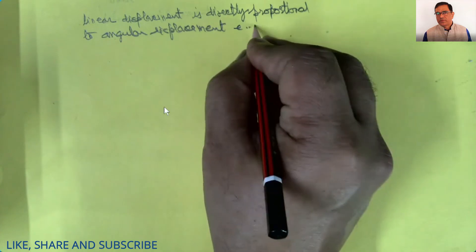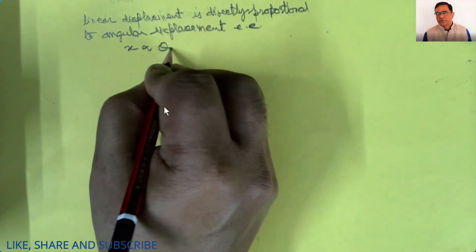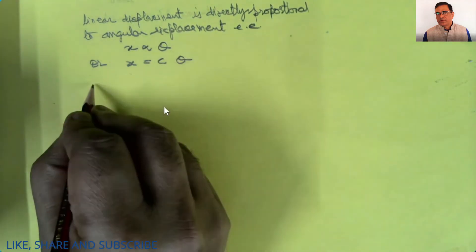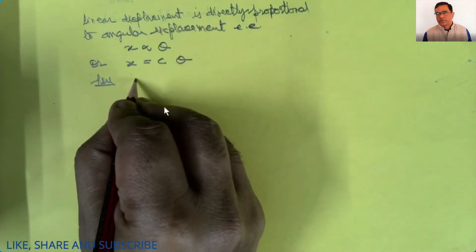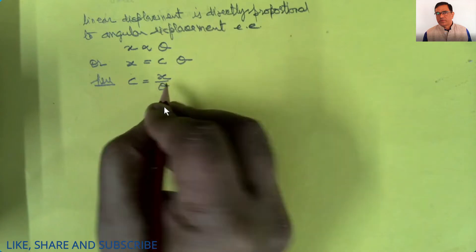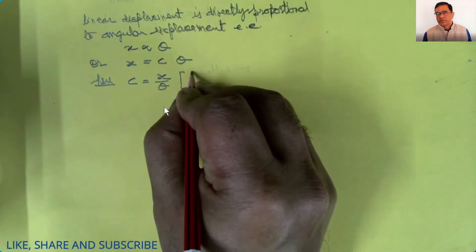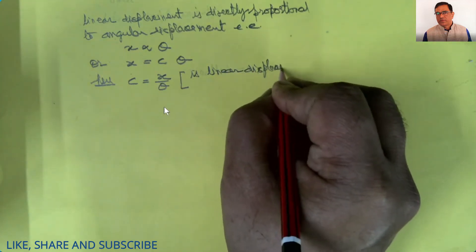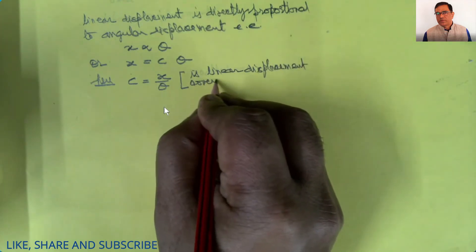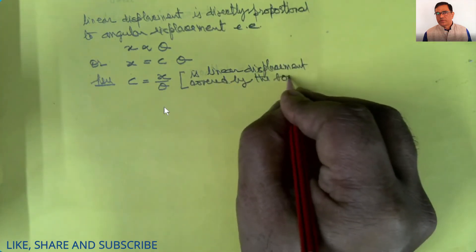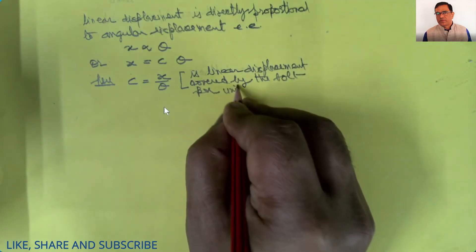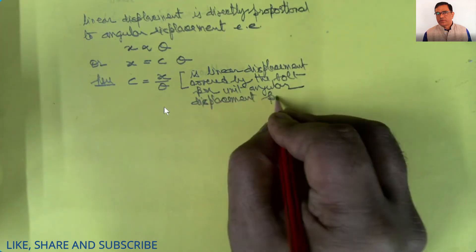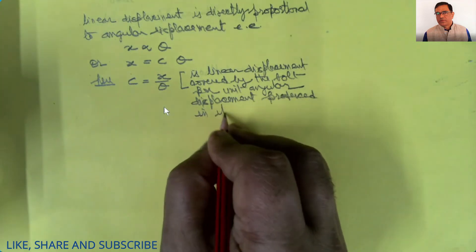That is, x is directly proportional to θ, or x equals some constant times θ. Here, c equals x by θ, which is the linear displacement covered by the bolt per unit angular displacement produced in it.